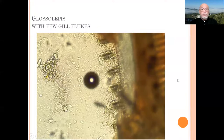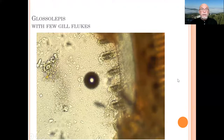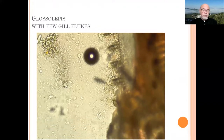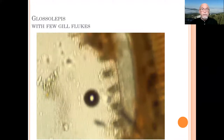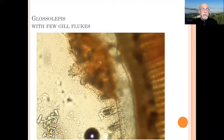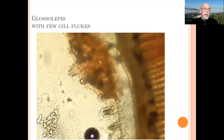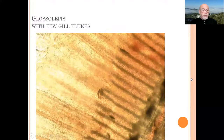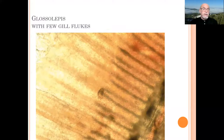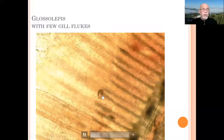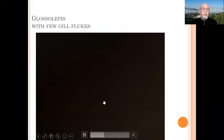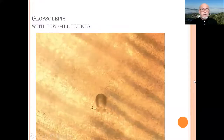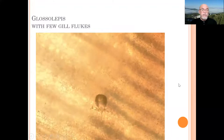At the same time, we also see there were a few flukes — some gill flukes also on the gills. This might be a potential risk of damage and infiltration of a bacterial infection. You can see the flukes here attached with their hooks to the gill tissue, causing lesions and a risk of bacterial infections.